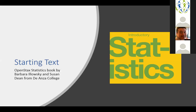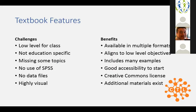I started with the OpenStax statistics book. If you've taught statistics, this one's been around for a while — it's a good quality book. It has a lot of different formats, aligns to all the lower-level objectives that were in this graduate statistics course, has lots of examples, it's really accessible, the Creative Commons license allows for a lot of different modifications, and it comes with a lot of different materials.